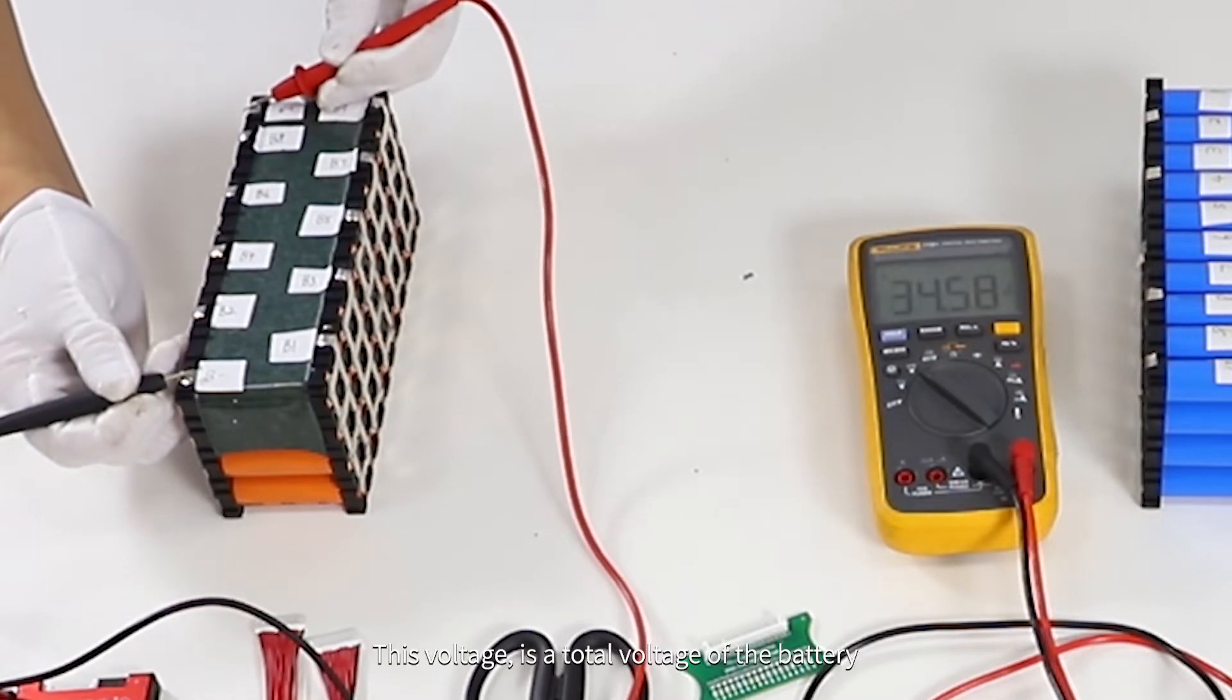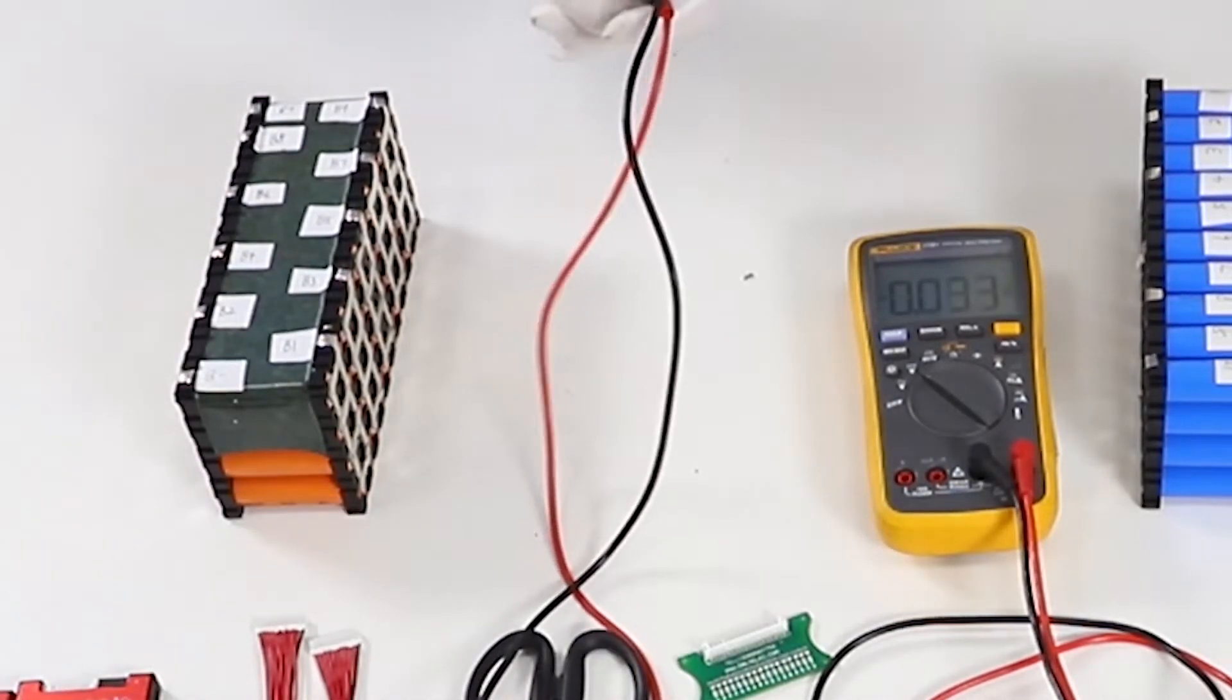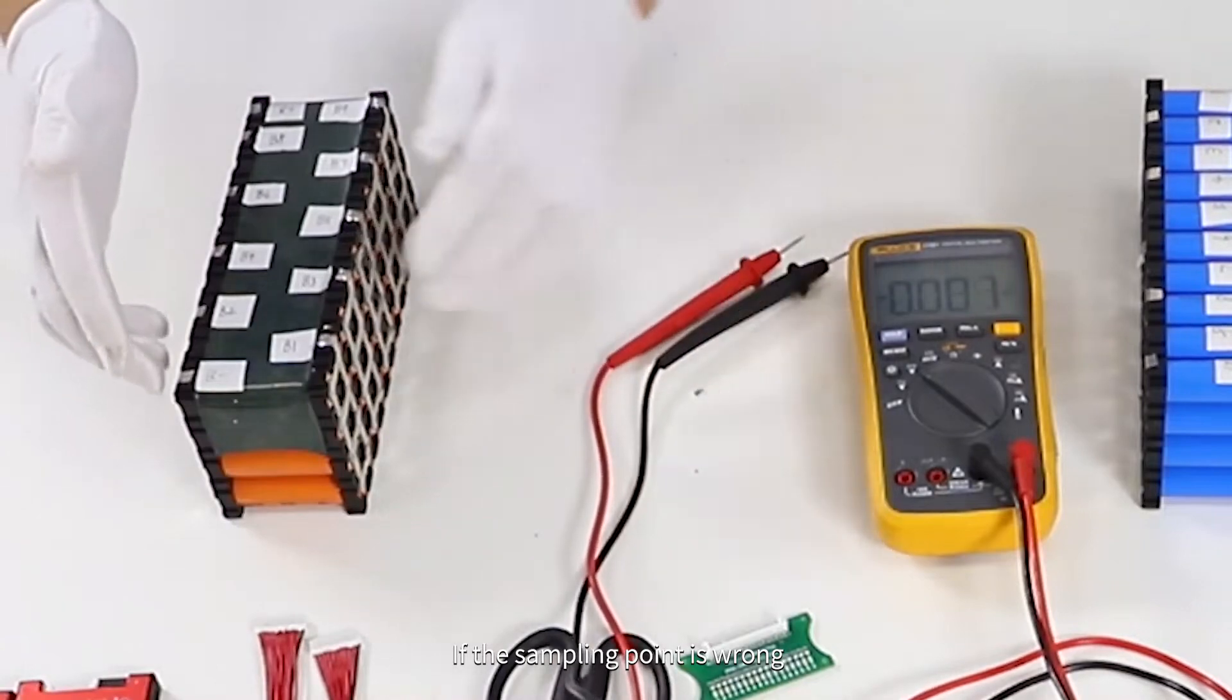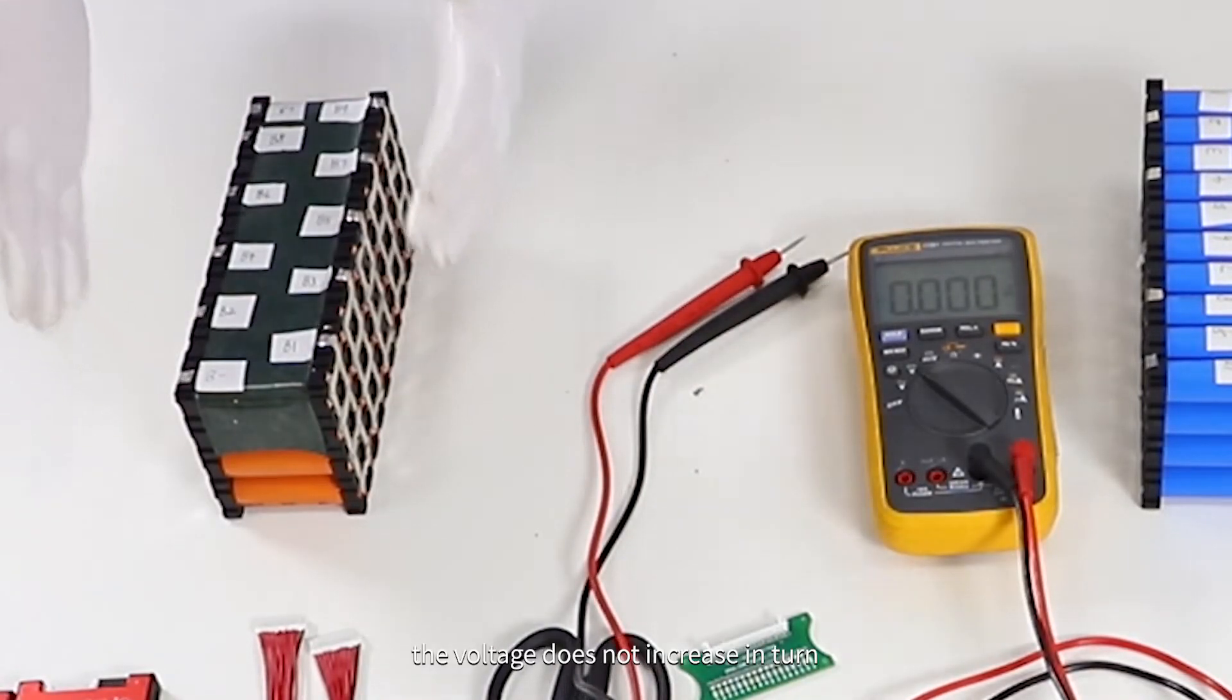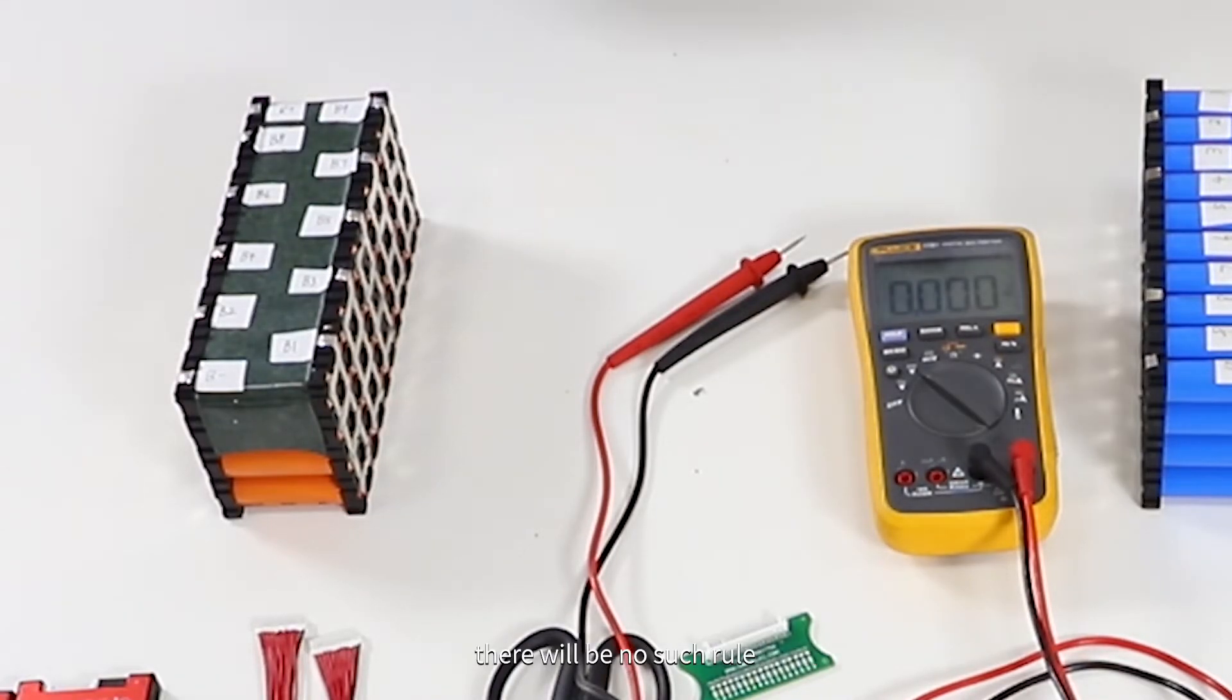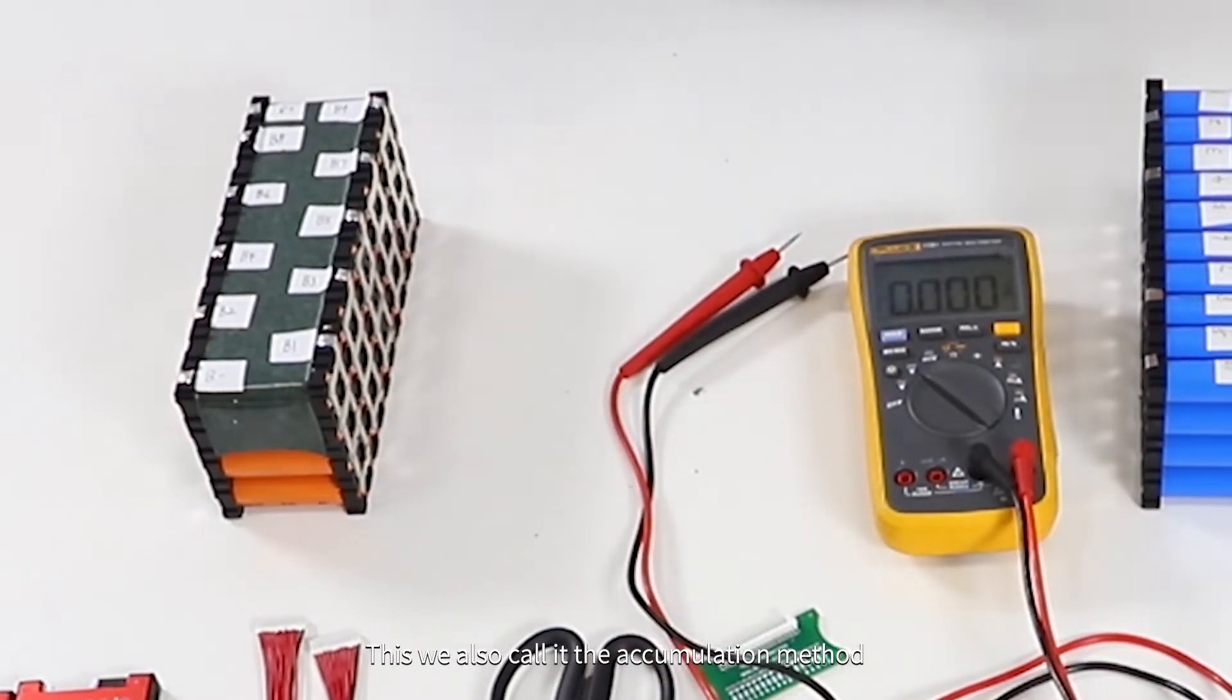This voltage is the total voltage of the battery, from B+ to B-. If this sampling point is wrong, the voltage does not increase in turn, there will be no such rule. This we also call the accumulation method.